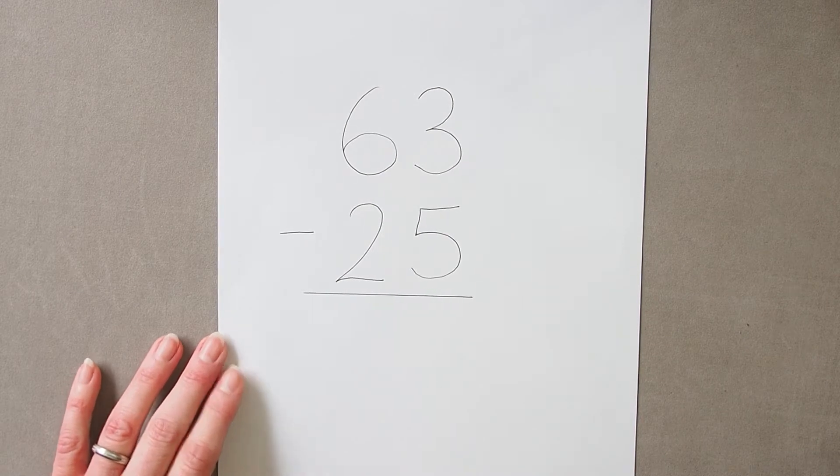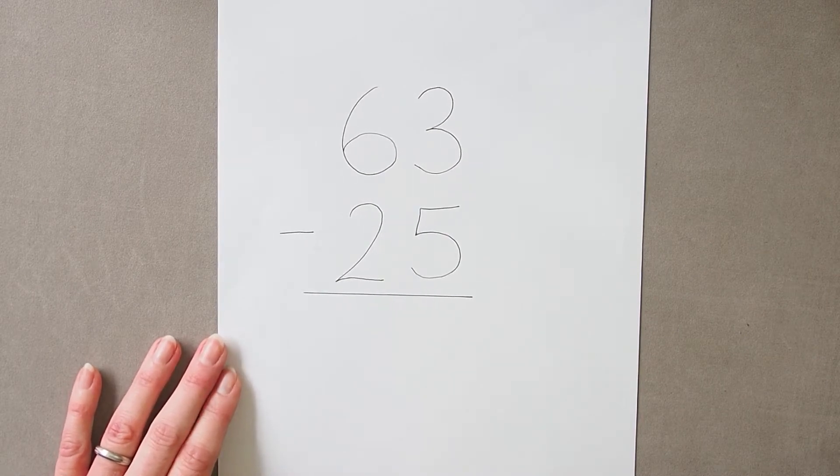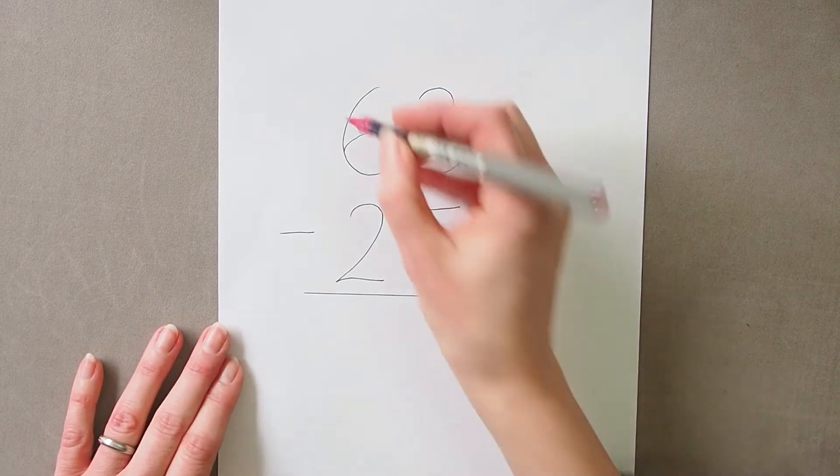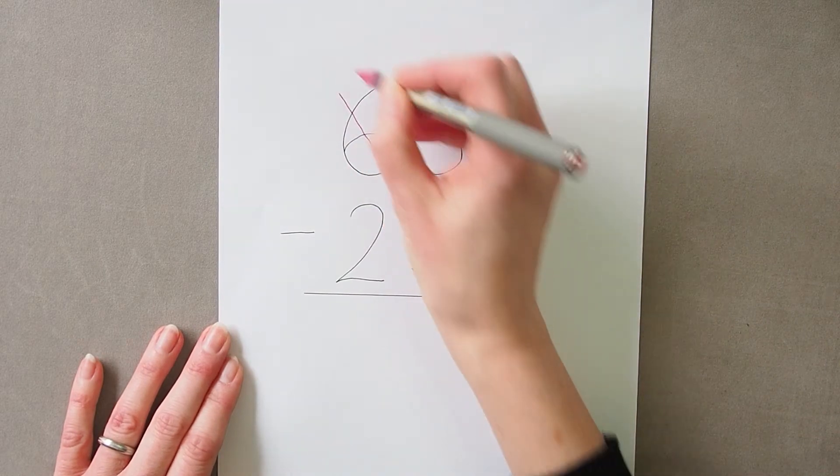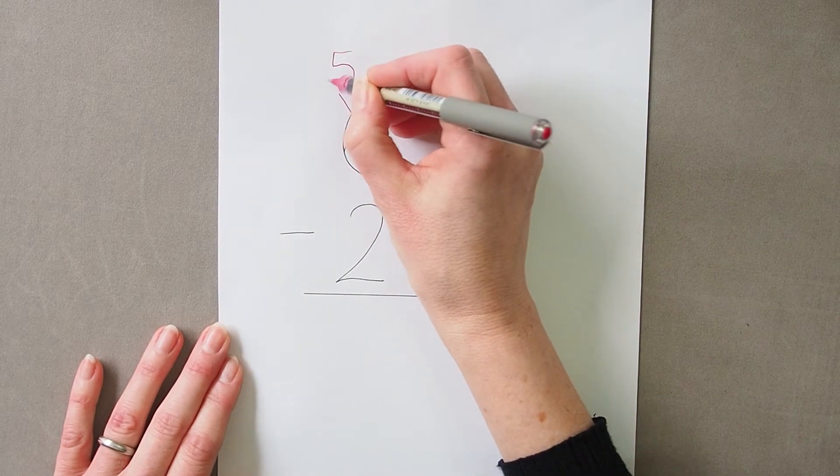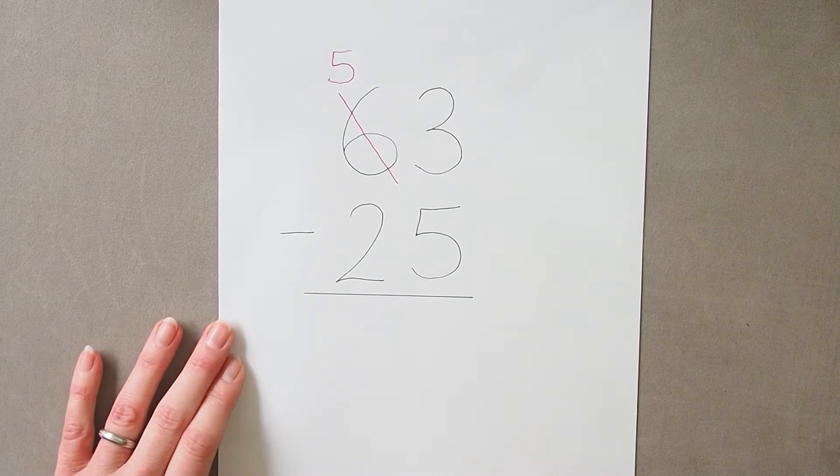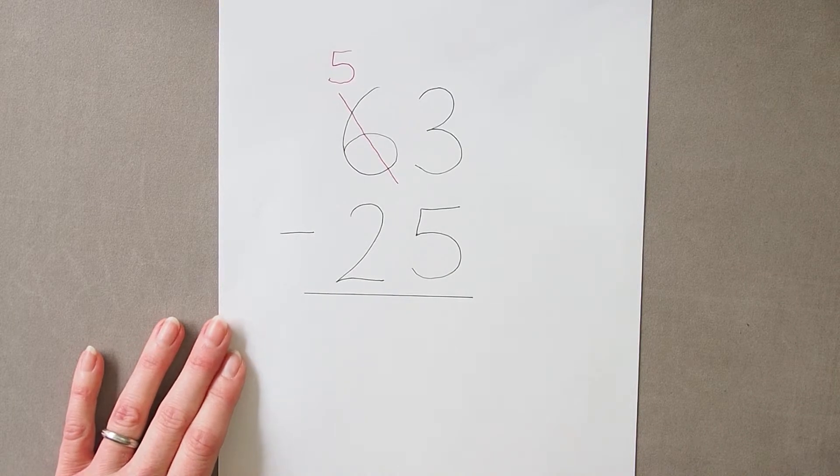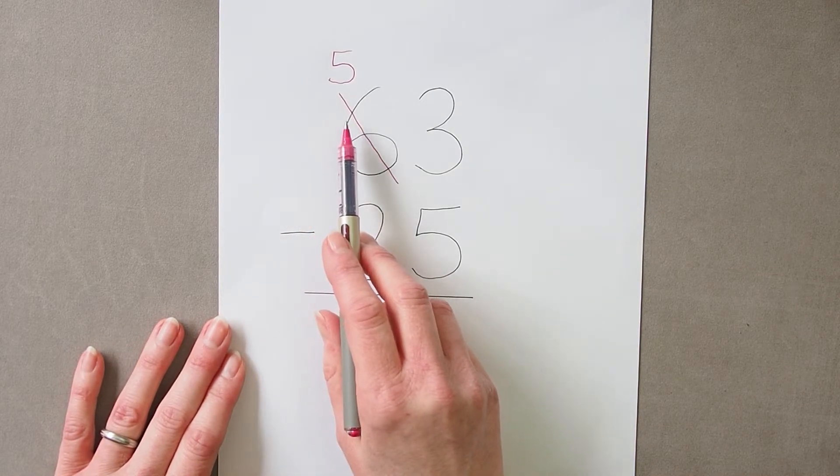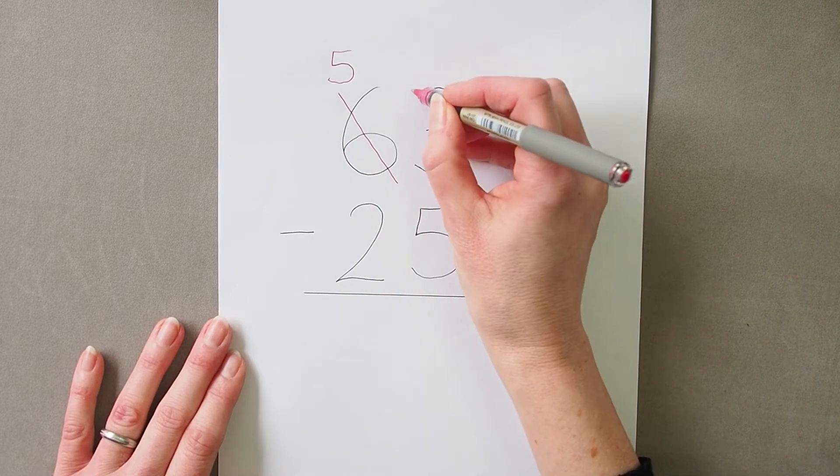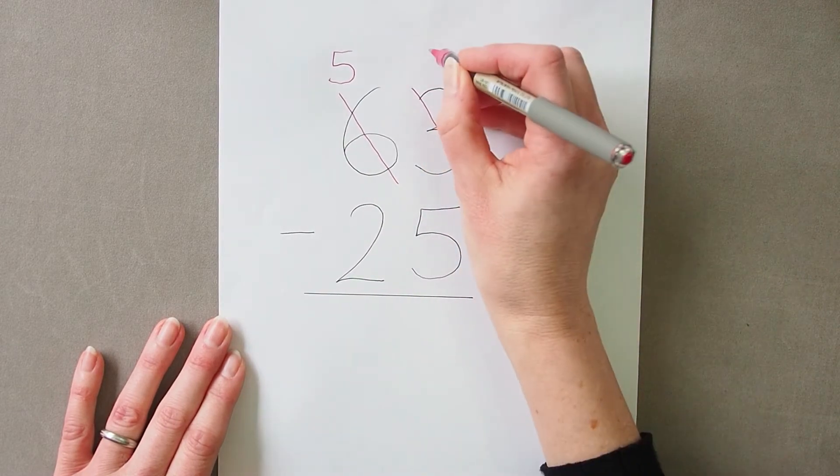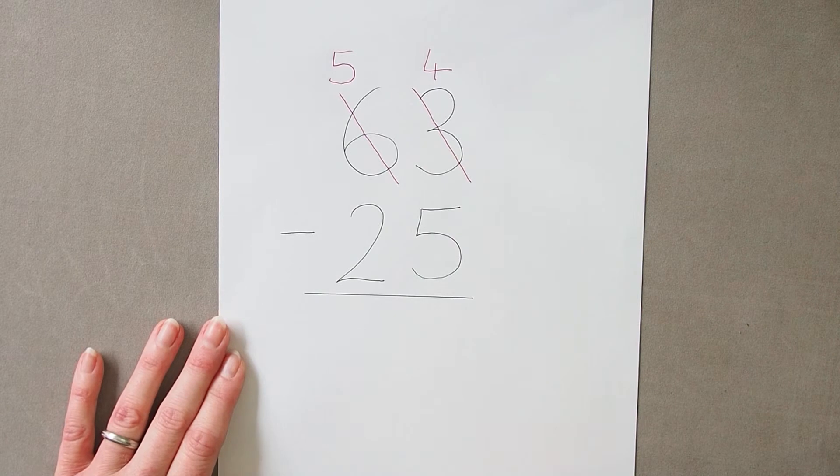Another mistake that can be made with exchanging is again to exchange a ten, but this time a lack of understanding that we've actually got a whole ten leads a pupil to just add this one that they've taken out of this column into the units and say that there are now four.